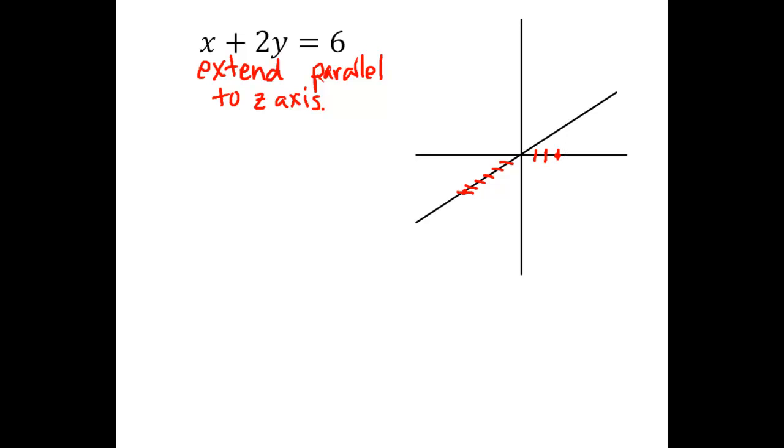Some people prefer to get it in y equals mx plus b form, but that's just kind of extra step. So there's that line that is the generating curve in the xy plane. Of course that extends beyond those two intercepts that I drew there, but we're going to focus on just the part in the first octant.